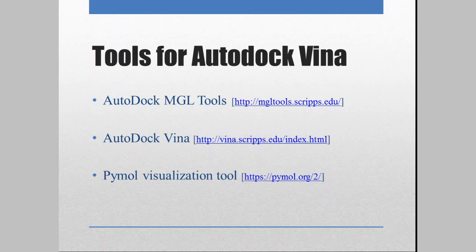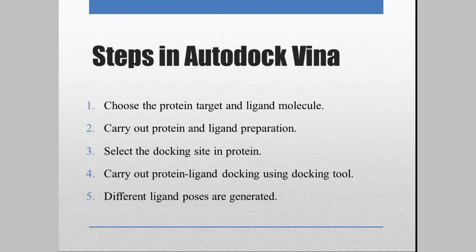Before we actually start with how AutoDock Vina works, let us first understand the steps for molecular docking in general. First is where you choose your protein target and your ligand molecule. Your protein target could be a protein downloaded from known databases like PDB or a homology model. Your ligand molecule can be from chemical databases like PubChem, DrugBank, or synthesized ligands from your own lab.